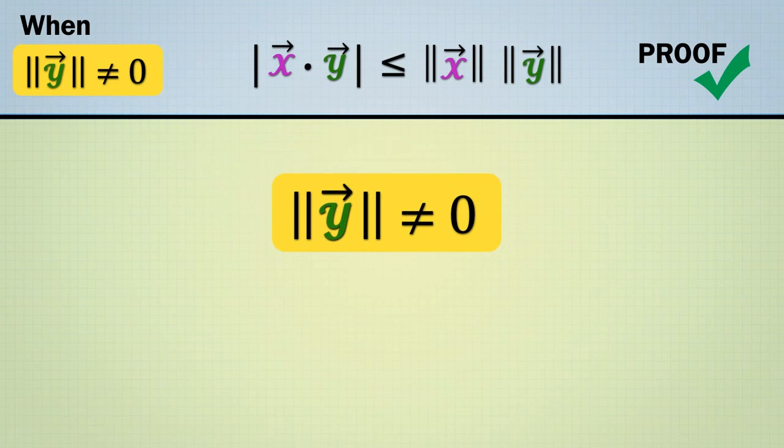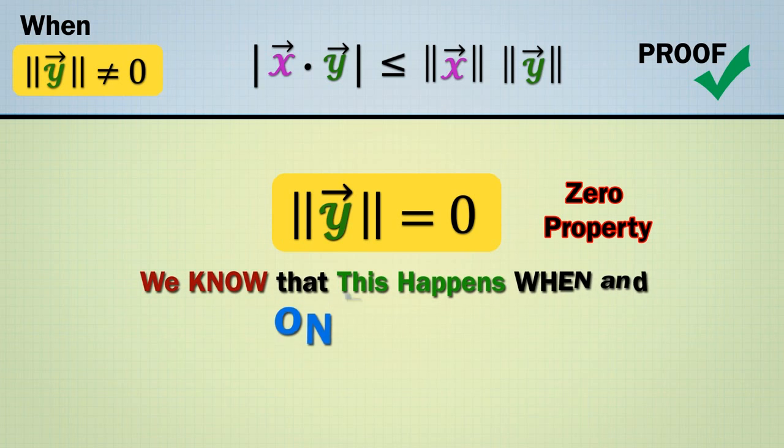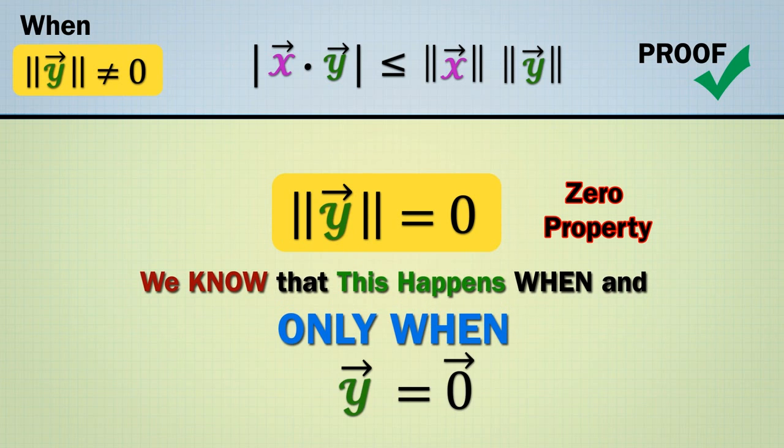But it is indeed possible for norm of y to equal zero. Namely, by the zero property, we know that this happens when and only when y is the zero vector.